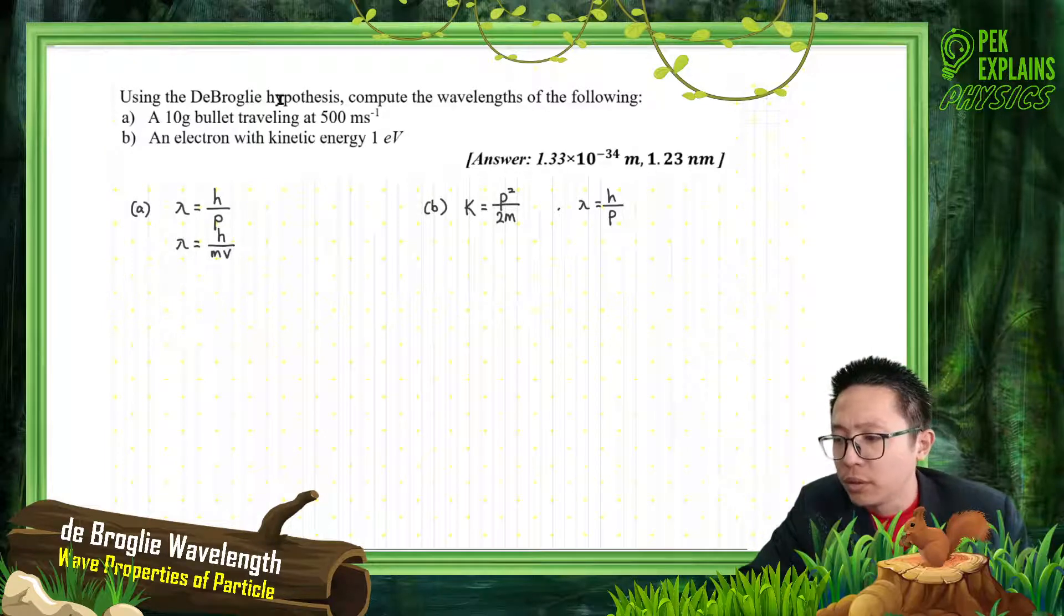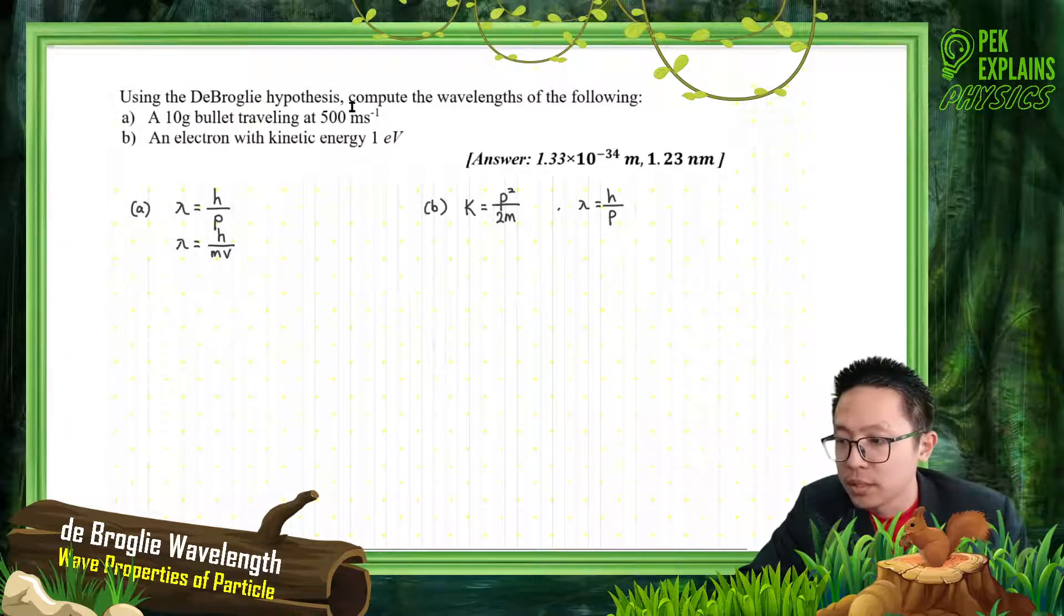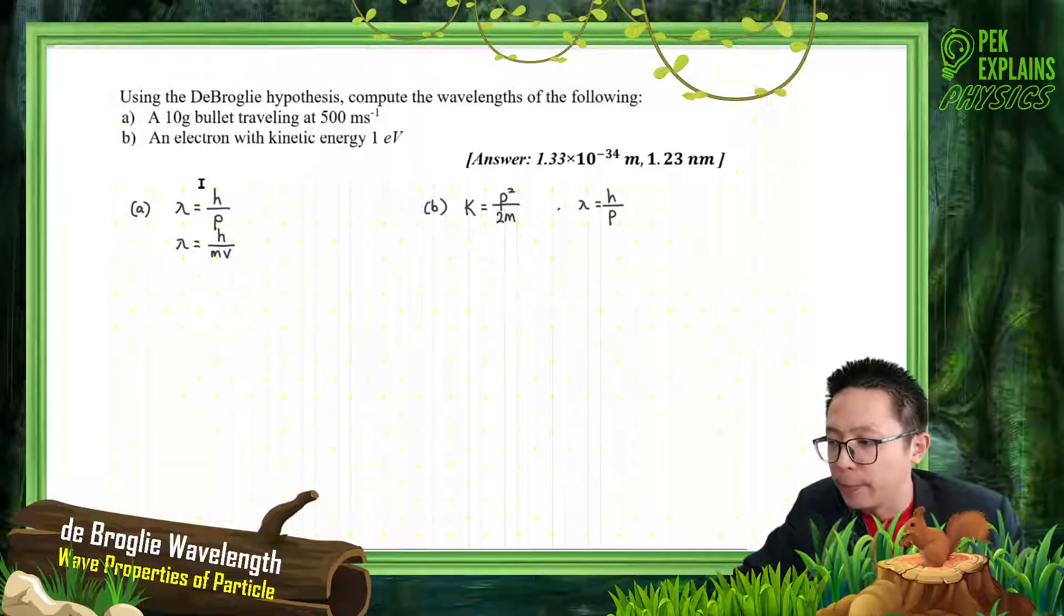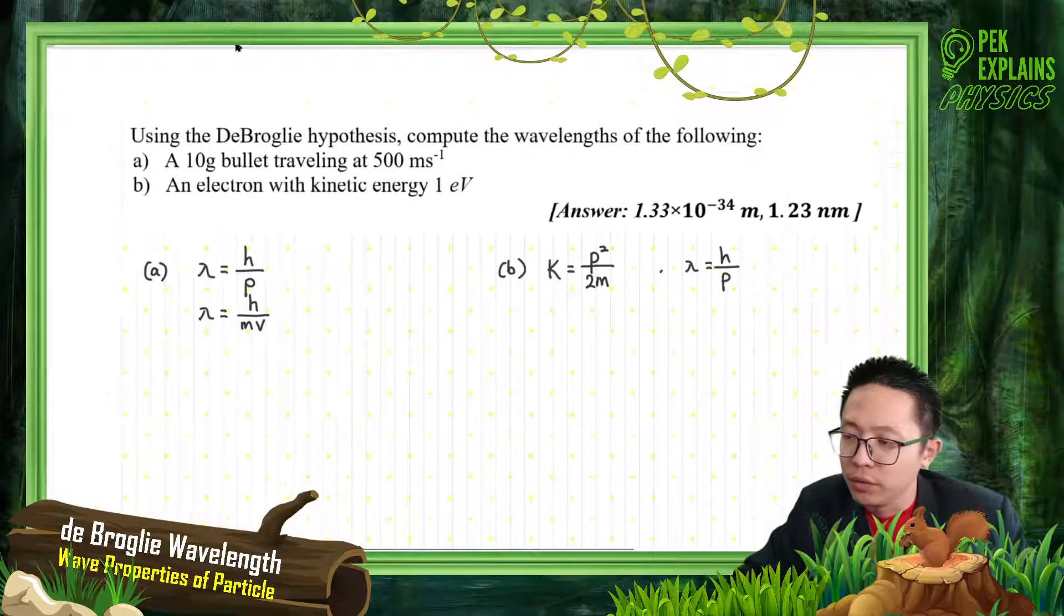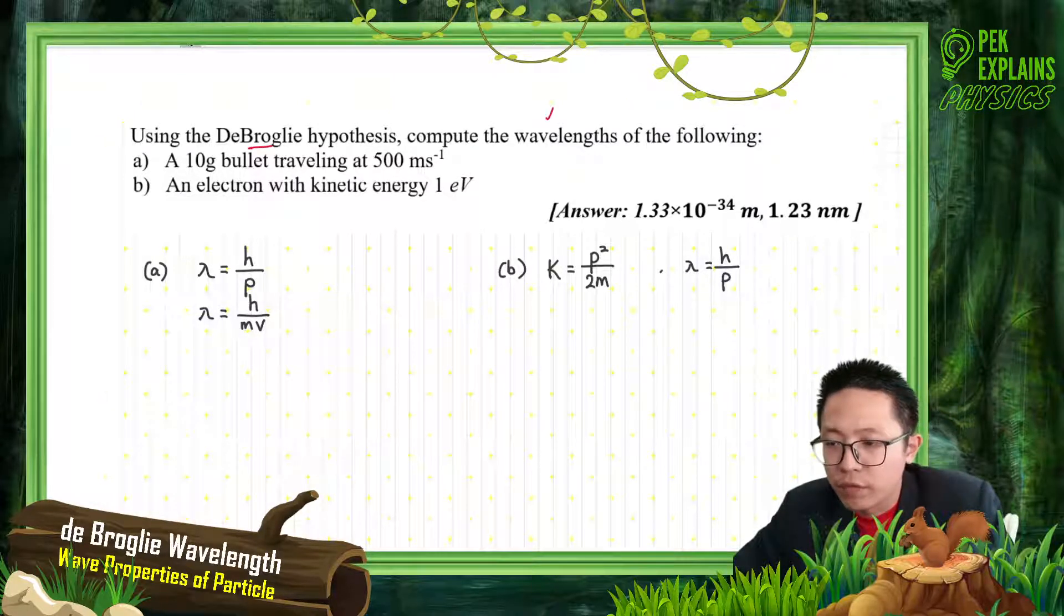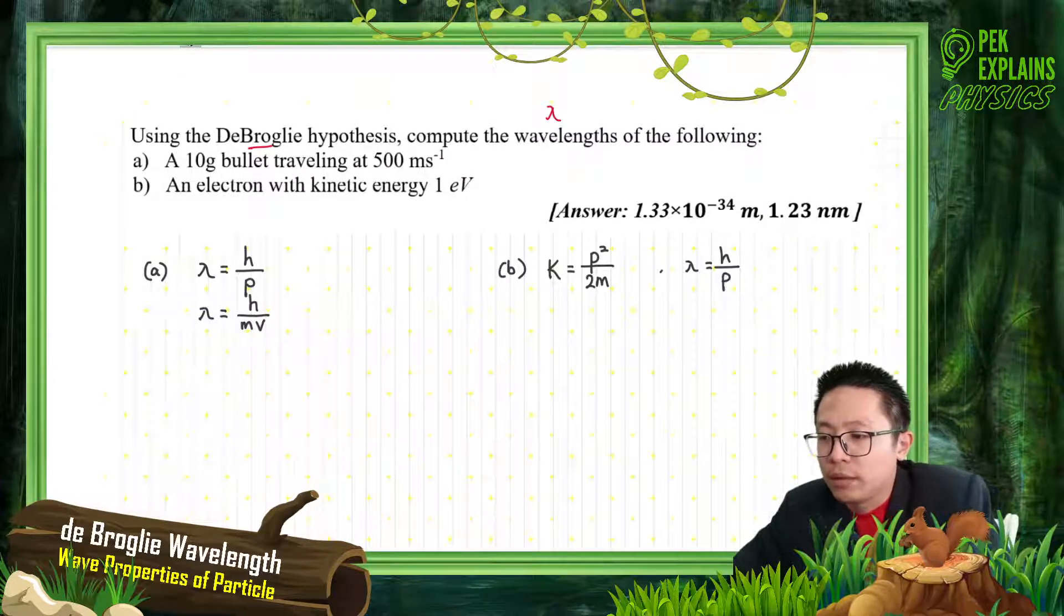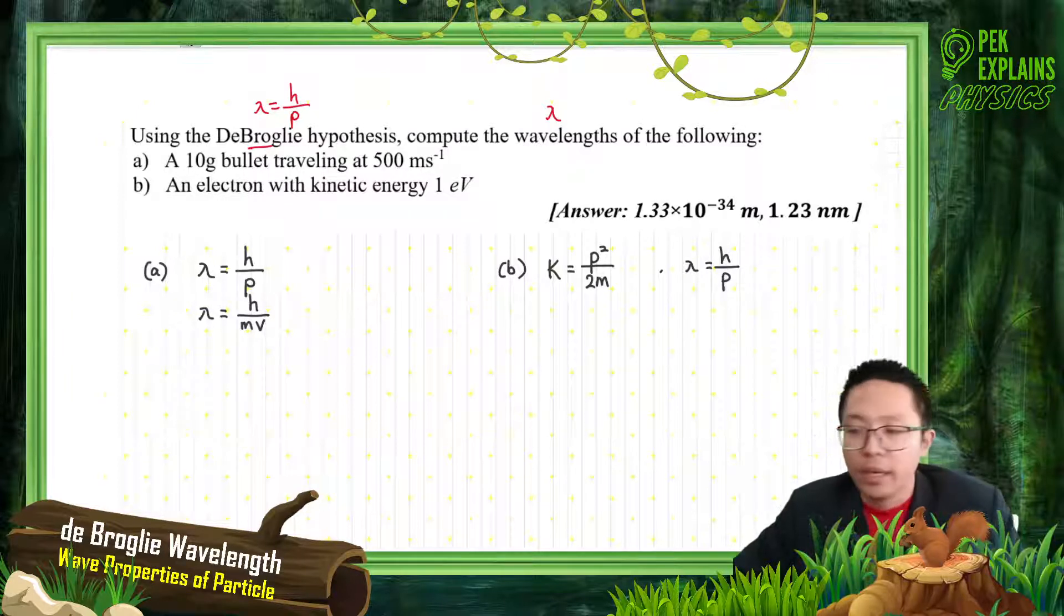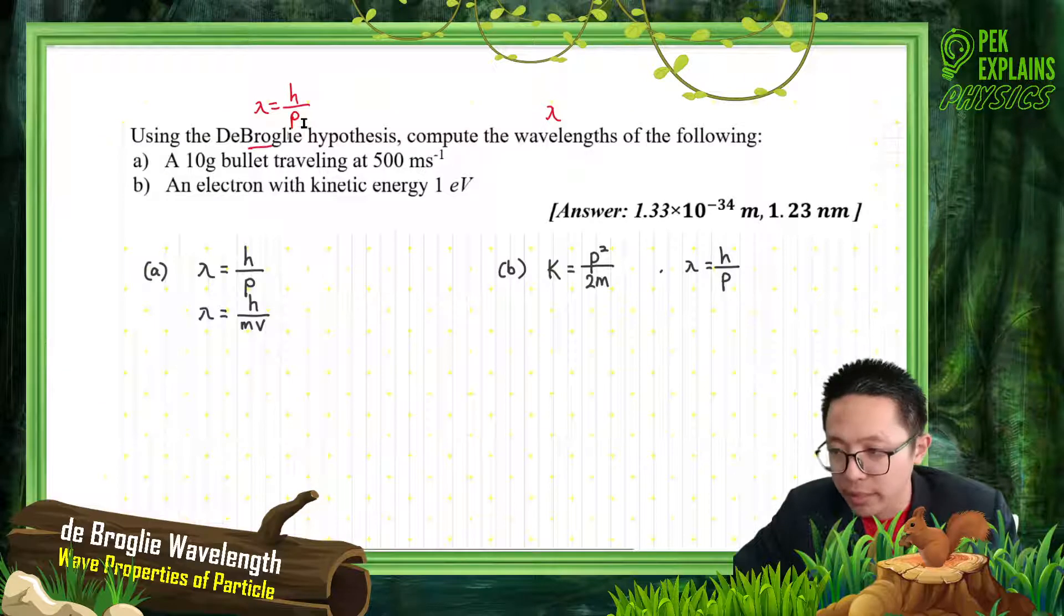Using the de Broglie hypothesis, compute the wavelengths of the following: a 10 gram bullet traveling at 500 meters per second. Now, to find the wavelength, de Broglie means we need to use the wavelength formula. De Broglie is H over momentum formula. Find the wavelength - it is given the mass and velocity.